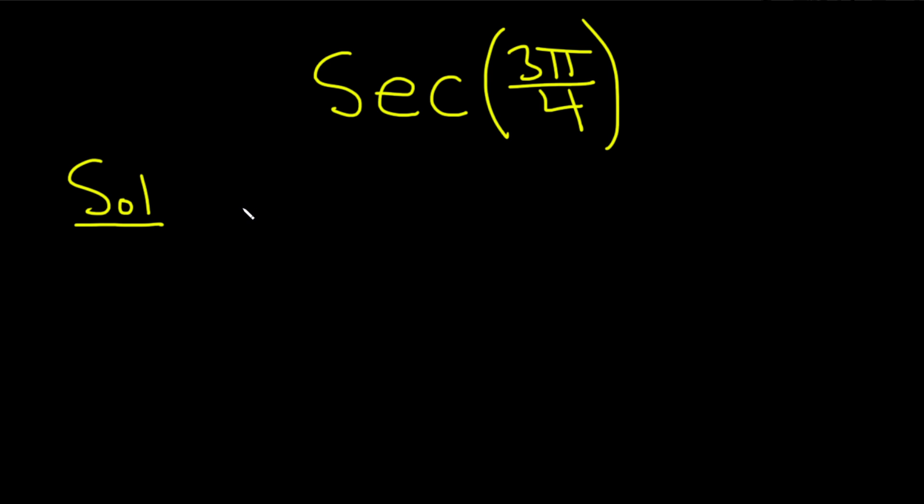The first thing we will do is write it as follows. We have the secant of 3 pi over 4, and this is equal to 1 over the cosine of 3 pi over 4.